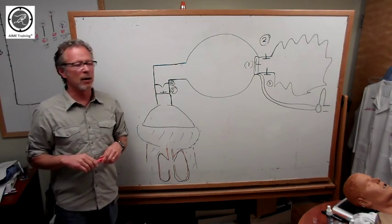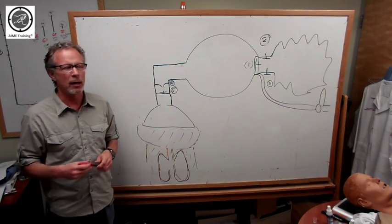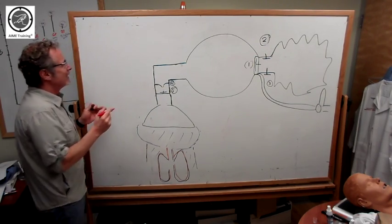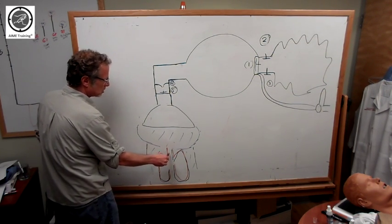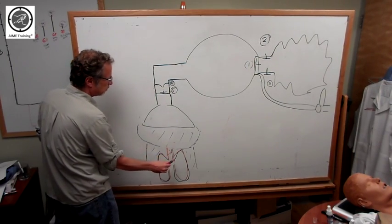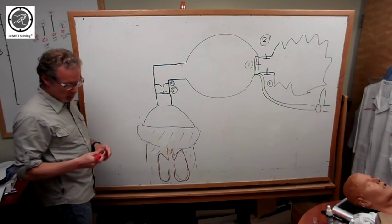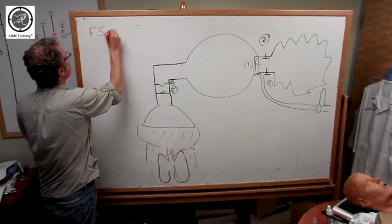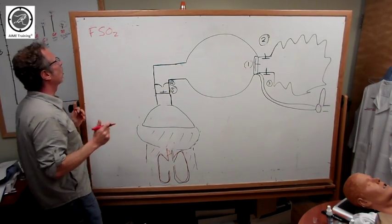In order to really understand how these work, we need to understand the relationship between flow and FIO2. So let's start with FIO2. FIO2, obviously, is the fraction of inspired oxygen. So this is down at this point. But the issue is it begins at the source. So the F, let's call it SO2, right, from the O2 tank or from your wall.